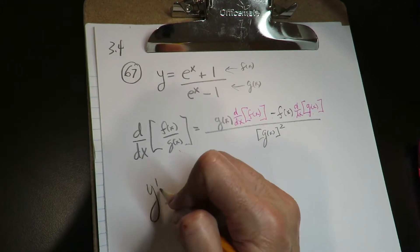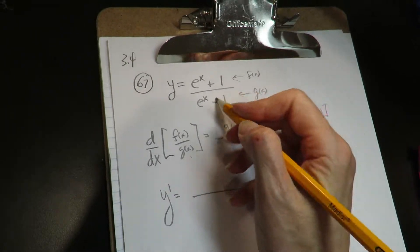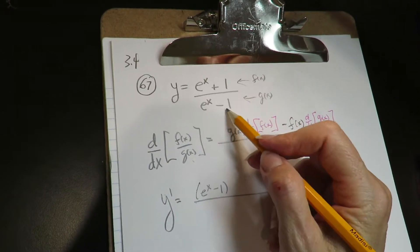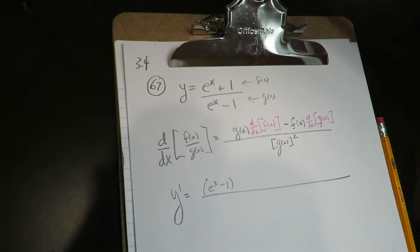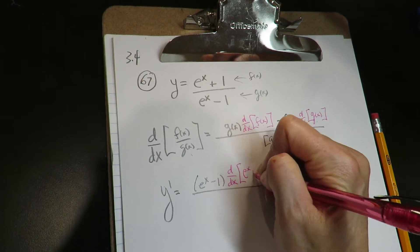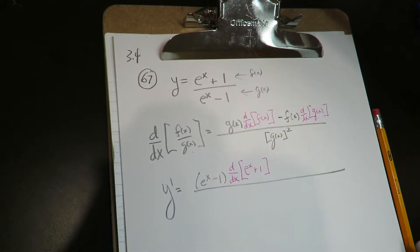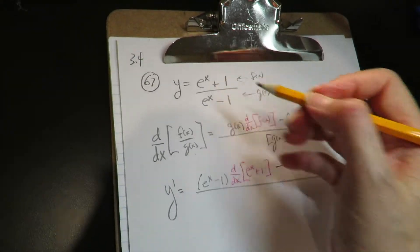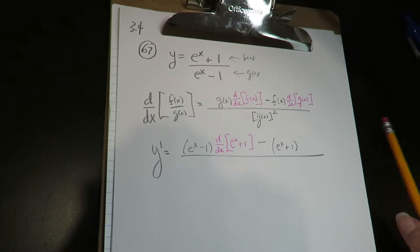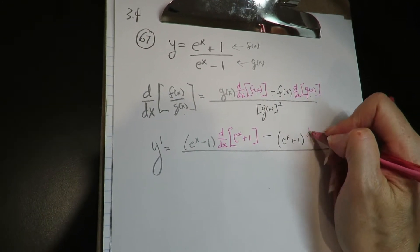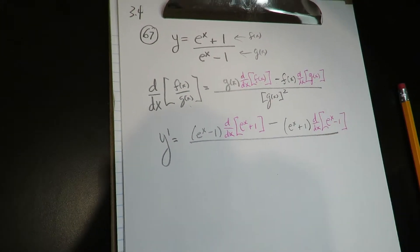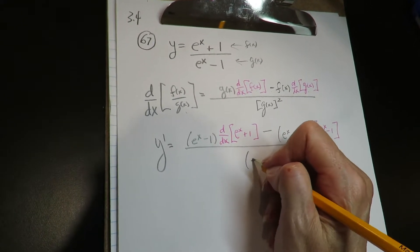All right, so let's go ahead and do this. So y prime is equal to, we start with the denominator, leave it as is, so e to the x minus 1. Next, we're going to take the derivative of the numerator function. I won't quite do it yet, I'm just showing you the steps. Then minus the numerator as is times the derivative of the denominator over the denominator squared.